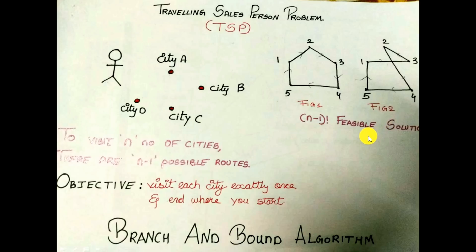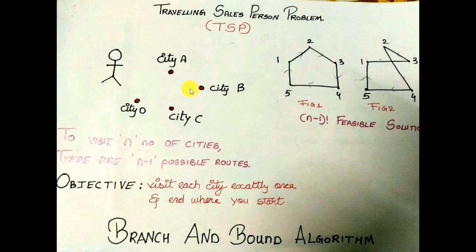Out of those n minus 1 factorial feasible solutions we should select one optimum solution. If the salesman travels between only two cities A and B, there will be only one possible route. For three cities A, B, C he has two route options. For four cities he has three possible routes. So in general, to visit n number of cities there are n minus 1 possible routes.